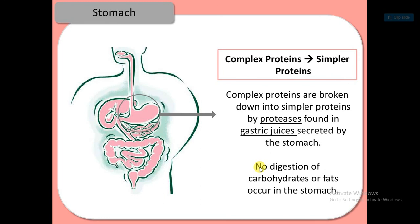In the stomach, complex proteins are broken down into simple proteins by the protease found in the gastric juice secreted by the stomach. No digestion of fats or carbohydrates occurs in the stomach — only protein is digested.